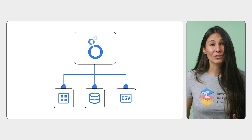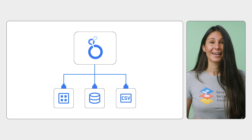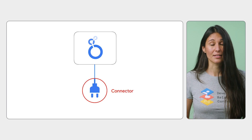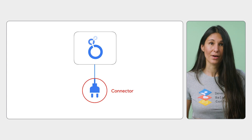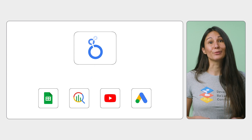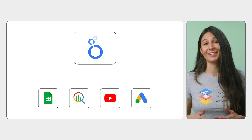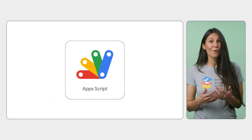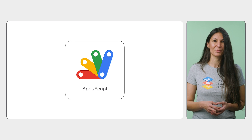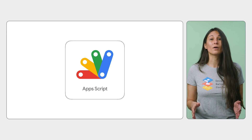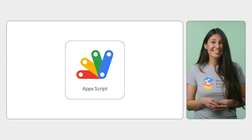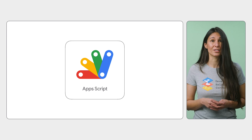To build charts and visualizations in Looker Studio, connect your data using a Looker Studio connector. The connector acts as a bridge between Looker Studio and your data. Looker Studio can connect to Google Cloud products like BigQuery and Google Sheets, and even services like Google Ads or YouTube Analytics. Developers can also build their own community connectors using Apps Script for internal use or make them publicly available. There are over 1,000 community connectors, and more are being added all the time.